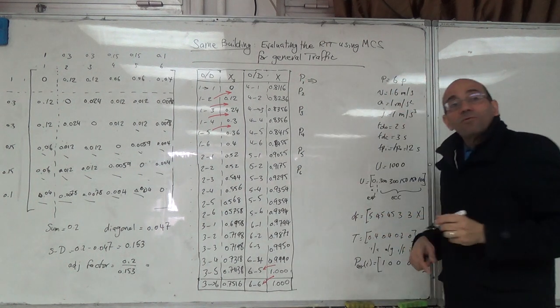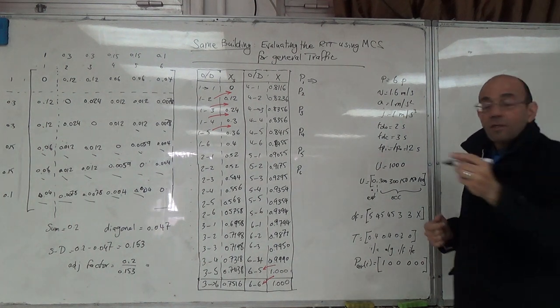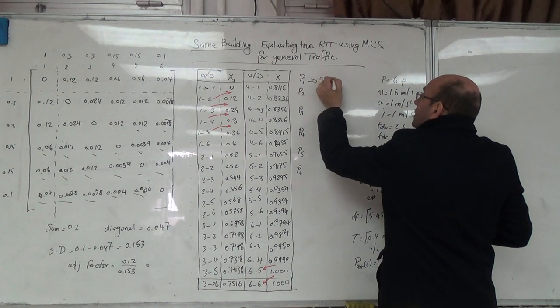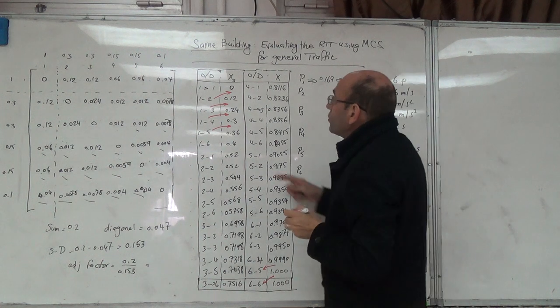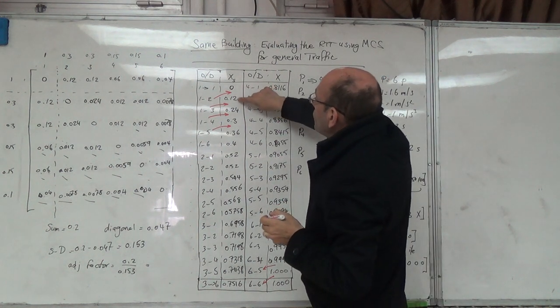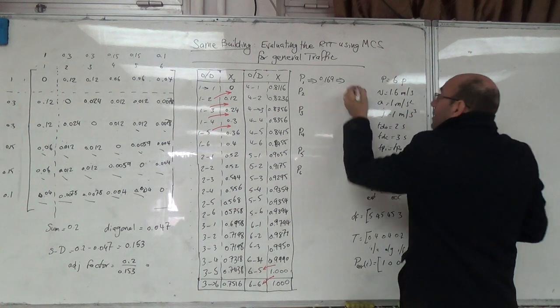Now P1, give me a random number. 0.69. 0.169 is going to be between 0.12 and 0.24. So it's going to be 1 to 3.